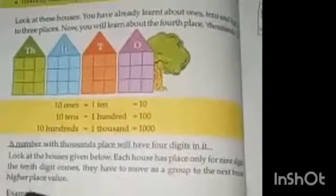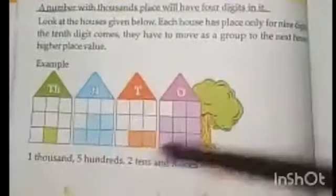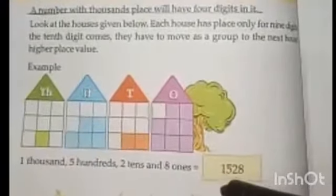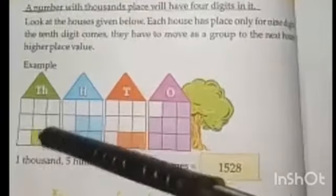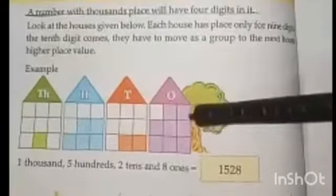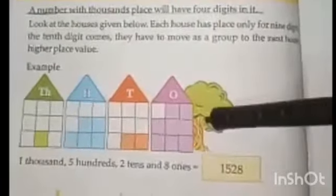1 thousand, 5 hundreds, 2 tens, and 8 ones. So we will put 1 into the thousands place, 5 into the hundreds place, 2 into the tens place, and 8 into the ones place. So it will be 1528.